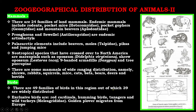Birds are represented by 49 families, out of which 39 are widely distributed. Exclusive birds include red cardinals, hummingbirds, tanagers, and wild turkeys. The golden plover migrates from Europe.